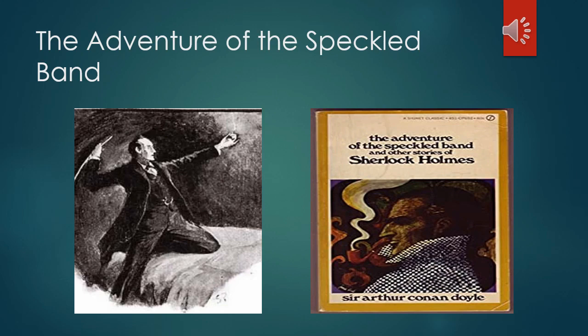The Adventure of the Speckled Band is the eighth Sherlock Holmes short story and the tenth Holmes story overall, following the novels A Study in Scarlet and The Sign of Four by British author Sir Arthur Conan Doyle. It was originally published in Strand Magazine in February 1892 with illustrations by Sidney Padgett, and later as the eighth story in the collection of The Adventures of Sherlock Holmes.